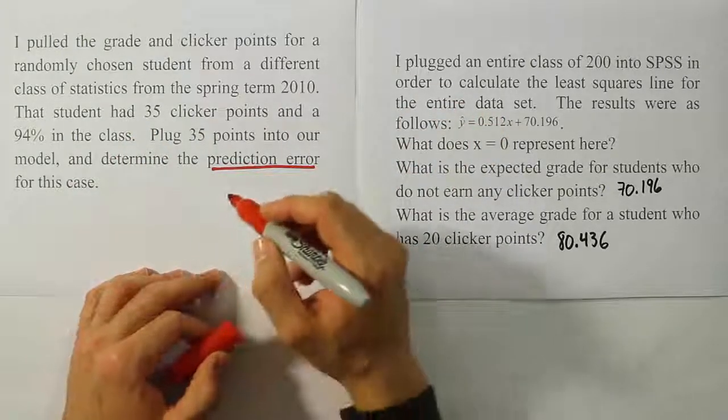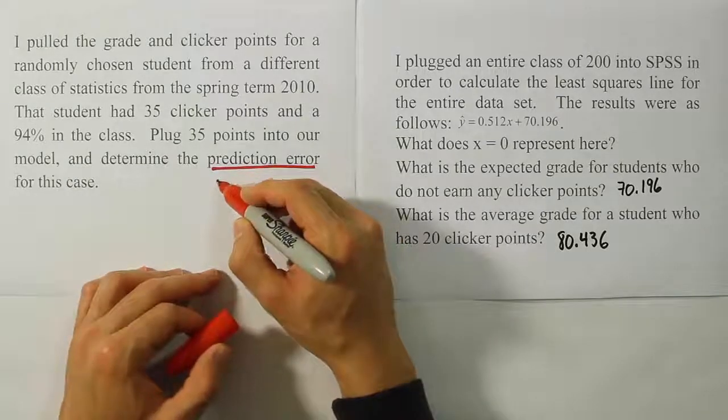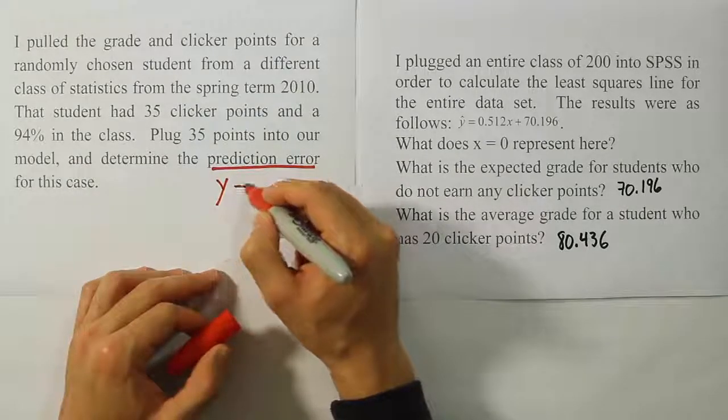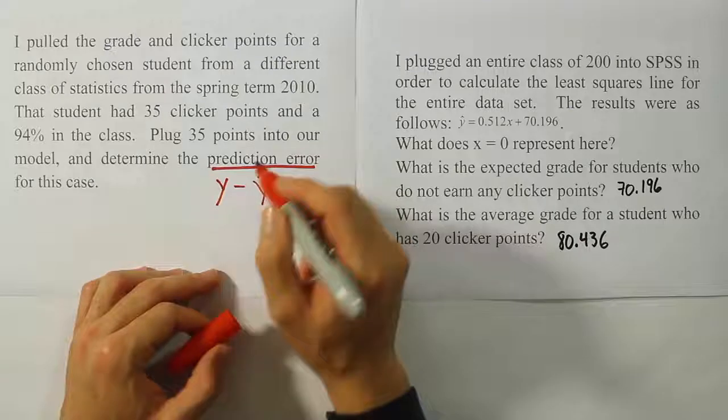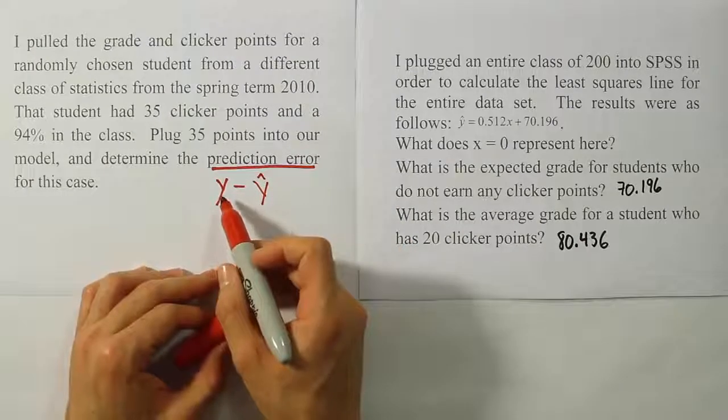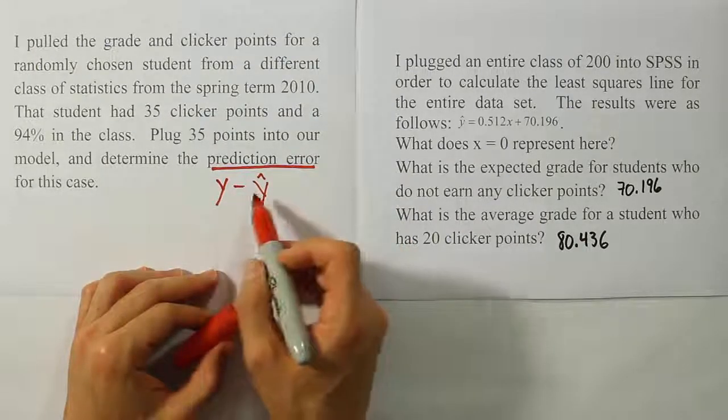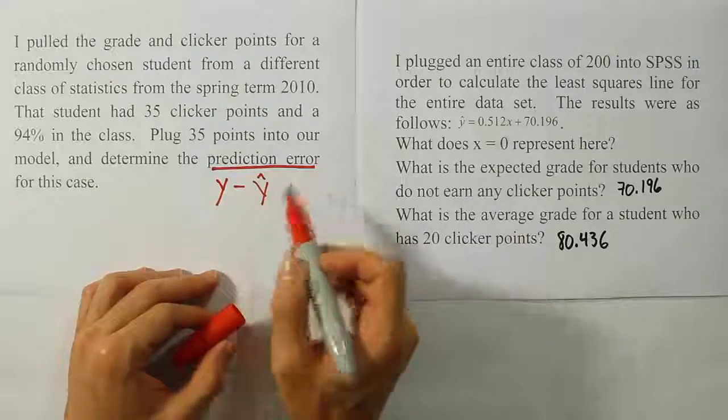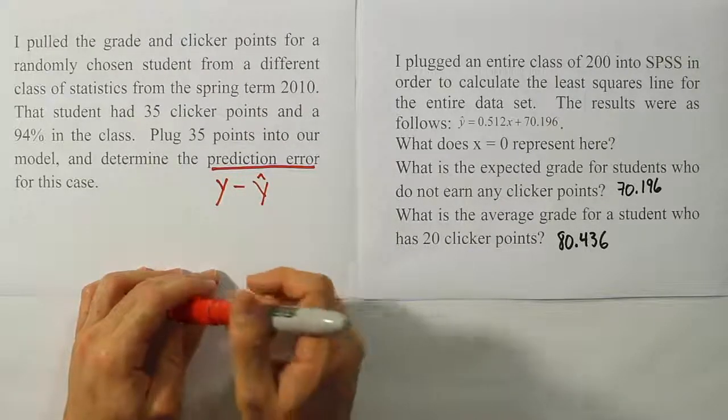So the prediction error is a special formula, it's very simple. You take the actual Y value minus the value that you predicted. It's that simple. So we want the actual Y value that was experienced minus the predicted Y value, and that's the prediction error.